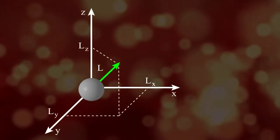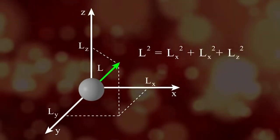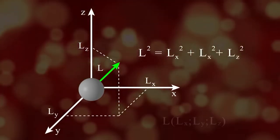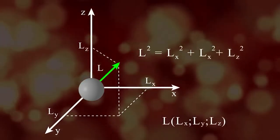The sum of the squares of these projections gives us the absolute value, and by analyzing their relationships, we can determine the vector's direction.